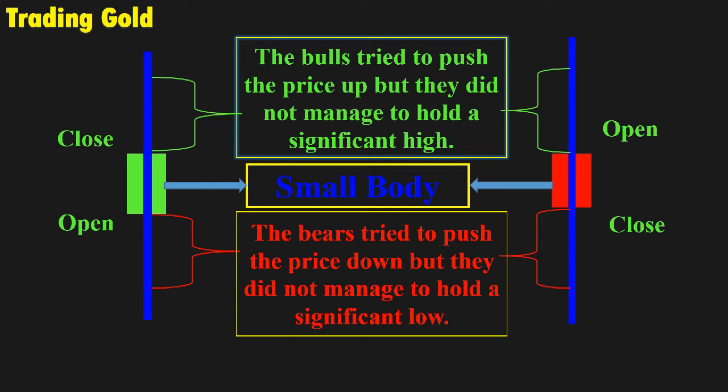But within the session, the buyers and the sellers both had the upper hand at one point, which is shown by the long upper and lower shadows. Due to this indecision and uncertainty, it is hard to know where the market will head next.